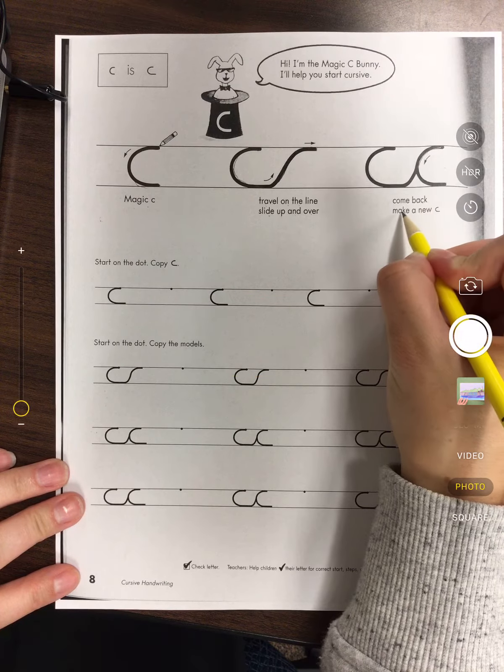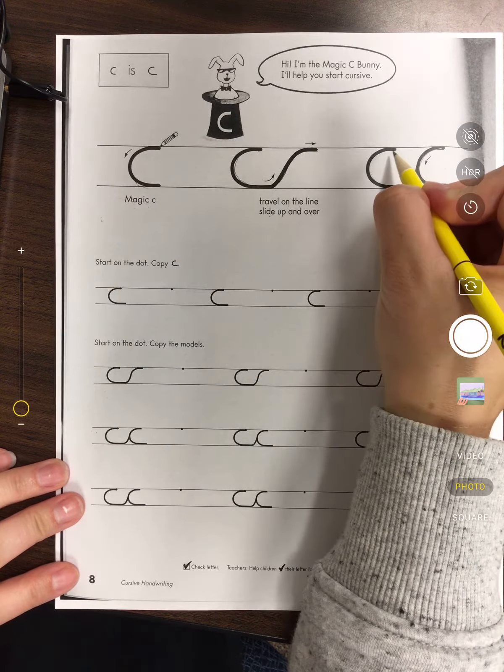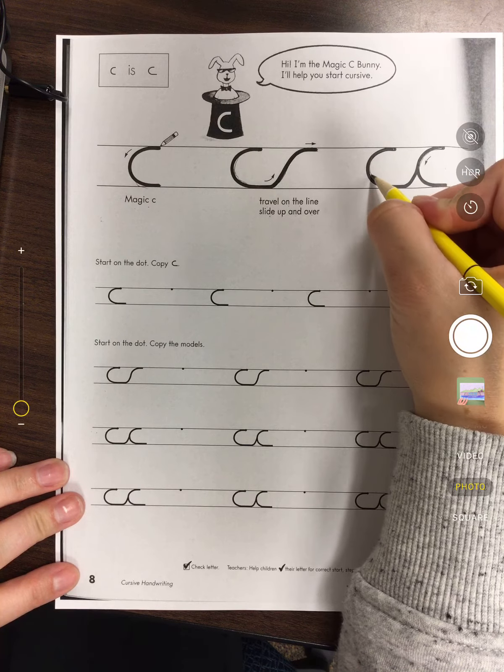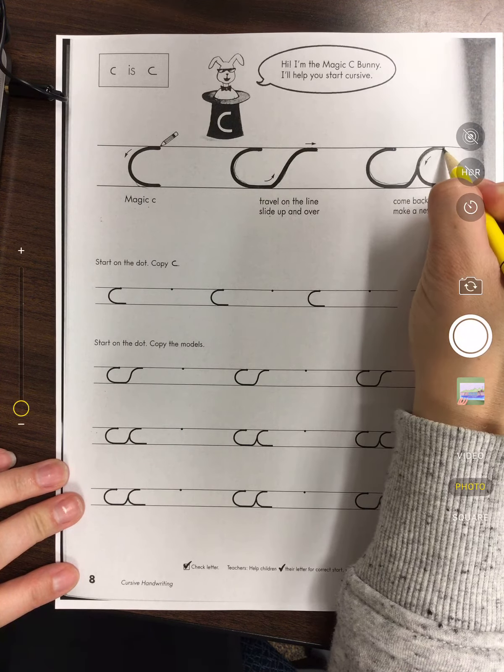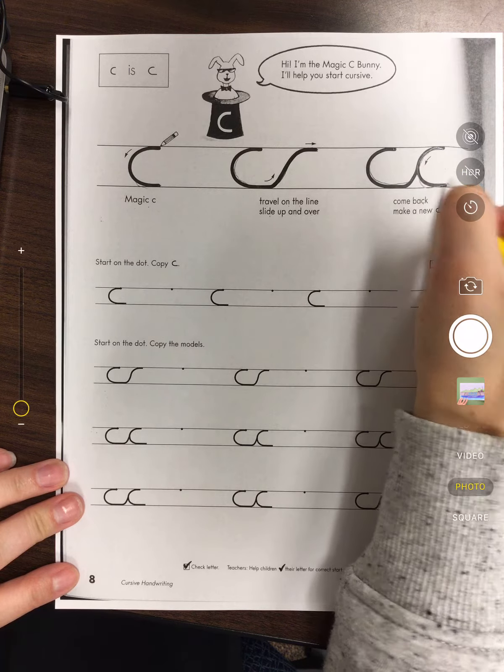Then it says come back, make a new C. So we're gonna start here, we're gonna come down. We're gonna go up and come back down to make our C.